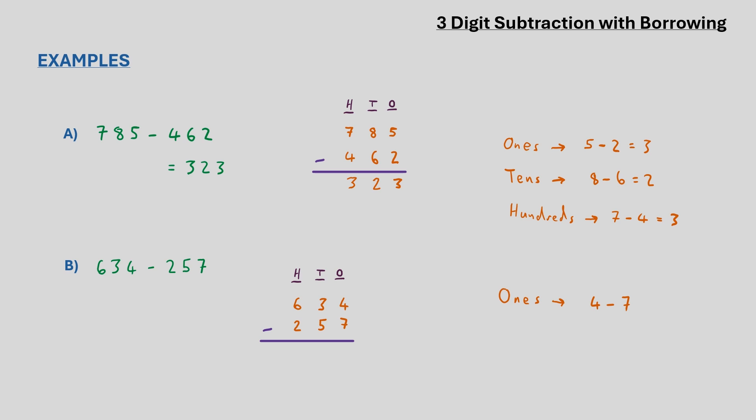We can borrow a digit from the next tens column in the following way. We cross through the 3 indicating that we are removing a digit. This will make 3 into a 2 which we write above. And the digit we've borrowed is written beside the 4, which makes the 4 into 14. So now the one column subtraction is 14 minus 7, which gives us a result of 7.